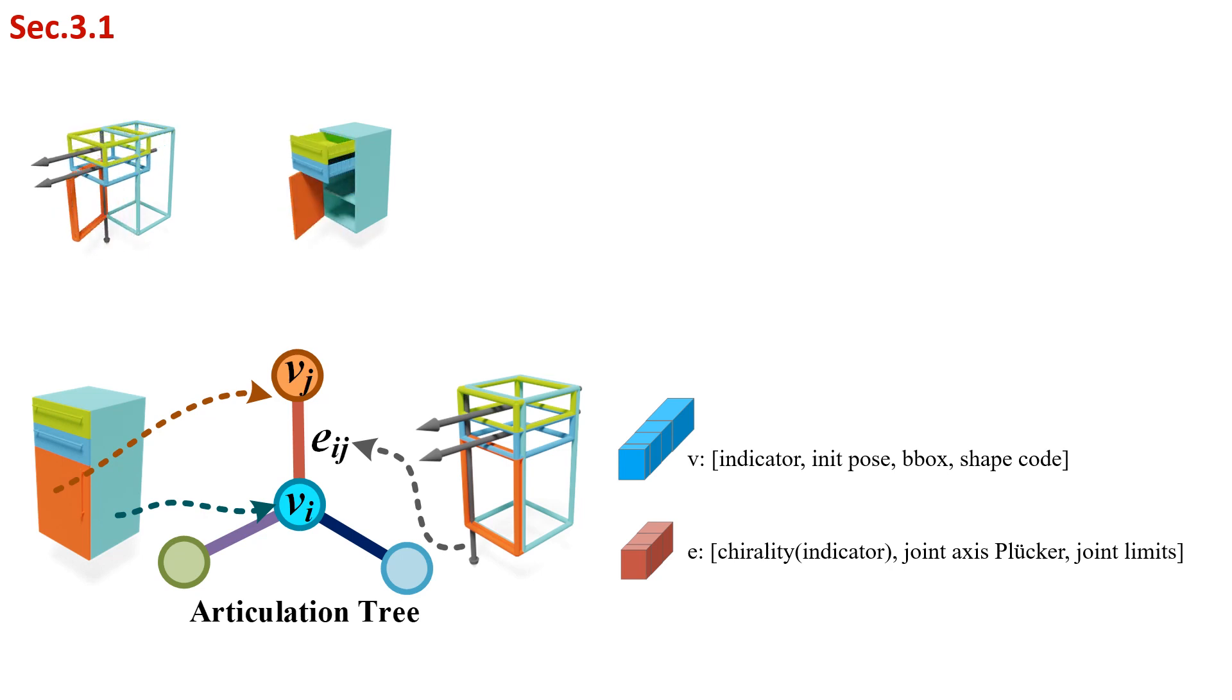Taking an articulated object from the dataset, we use its zero joint states, that is, the closed-door initial pose shown on the left, to find the global part configurations, and represent each rigid part as a node on the articulated tree, with its pose, bounding box, and shape code. The shape code is from a pre-trained shape autoencoder occupancy network.